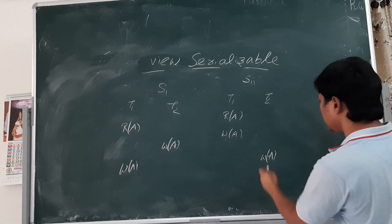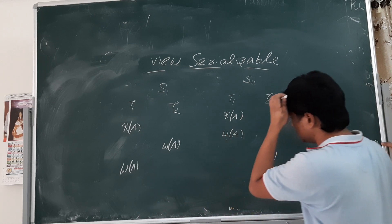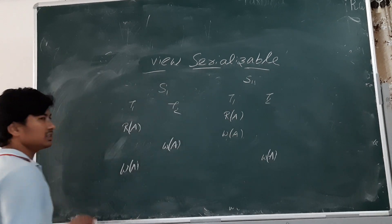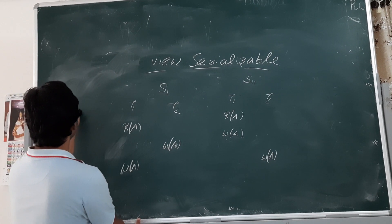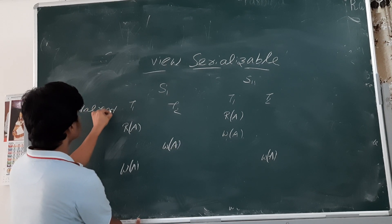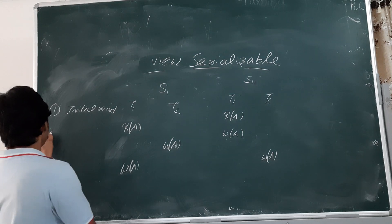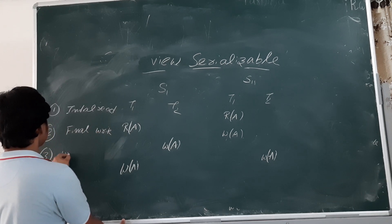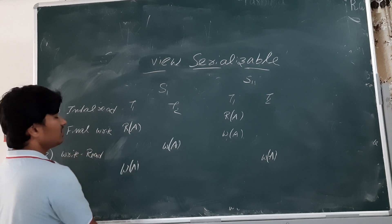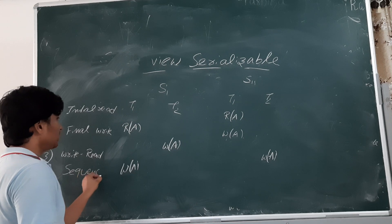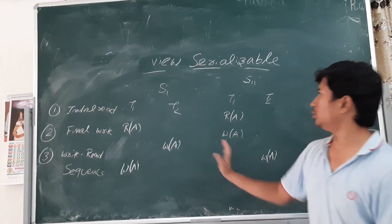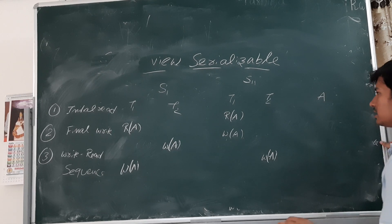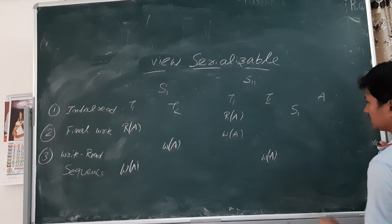S11 is a serial schedule and S1 is a non-serial schedule. We will check whether they are view equivalent. To identify view equivalence, we check three conditions: first, whether the initial read is done by the same transaction in both schedules for all data items; second, the final write; and third, the write-read sequence for all data items. Here we have only one data item, A.